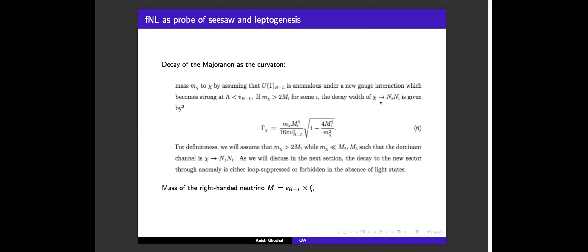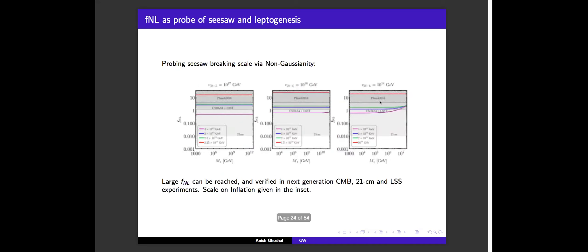On one hand, this axion-like particle is responsible for generating the neutrino mass and the seesaw scale. On the other hand, it can decay into right-handed neutrinos, which can have subsequent decays into standard model particles satisfying the Sakharov conditions and giving baryogenesis via leptogenesis. These are the expressions for the axion-like particle decay width written in terms of the axion-like particle mass, symmetry breaking scale, and right-handed neutrino mass.